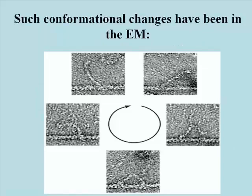Does this really happen? Yes, we have evidence that it does. This is a form of myosin in which one can actually capture in the electron microscope the myosin head in different conformations. Many electron micrographs were taken of myosin heads in various stages of conformation, and then the illustrations were organized in an order that made sense.